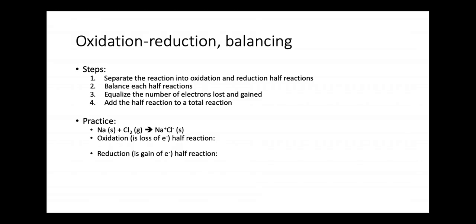Here is a step plan for balancing oxidation-reduction reactions. Step 1: separate the reaction into oxidation and reduction half reactions. Step 2: balance each half reaction. Step 3: equalize the number of electrons lost and gained between the oxidation and reduction half reactions. Then add the two half reactions together to get the total balanced reaction.